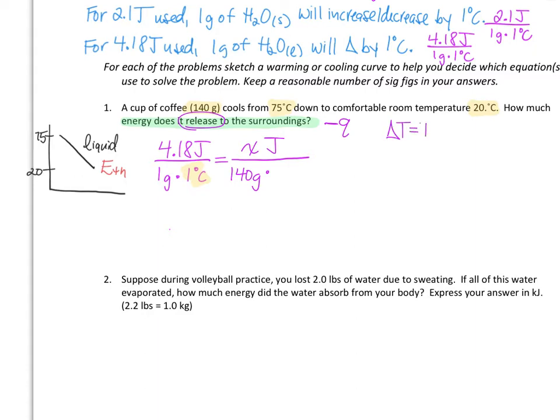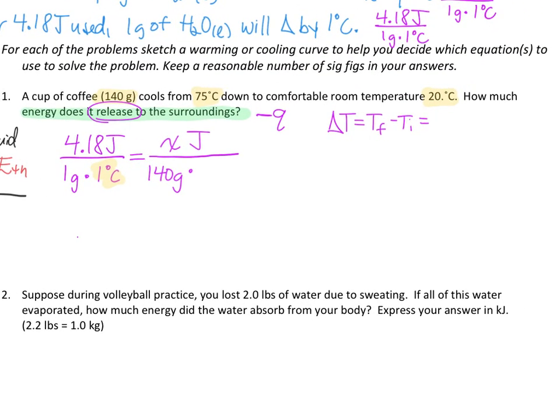Change in temperature is always going to be final minus initial. So here we're going to take 20 degrees Celsius minus 75 degrees Celsius, which is going to give us a change of negative 55 degrees Celsius. So that's going to get plugged in to our value here.